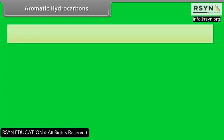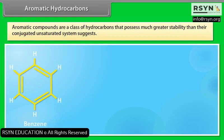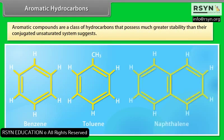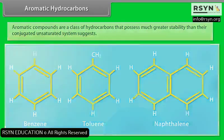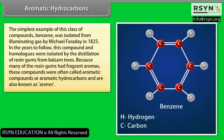Aromatic hydrocarbons. Aromatic compounds are a class of hydrocarbons that possess much greater stability than their conjugated unsaturated system suggests. The simplest example of this class of compounds, benzene, was isolated from illuminating gas by Michael Faraday in 1825.